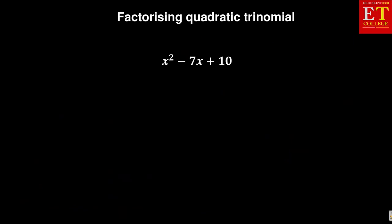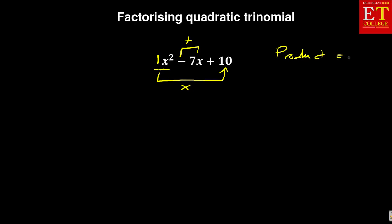Now let us look at the last example for today, which also uses the product sum method. I'm going to be a bit faster since you saw how we did the first part. Remember, there is a one before x squared, so we multiply the first number by the last number to get the product, and the center number is the sum. The product is one x squared times ten — positive ten x squared — and the sum is negative seven x.